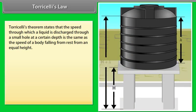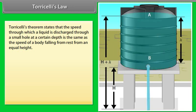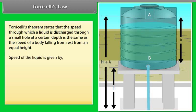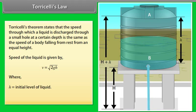Torricelli's law states that the speed at which a liquid is discharged through a small hole at a certain depth is the same as the speed of a body falling from rest from an equal height. The speed of the liquid is given by V = √(2gh), where h is the initial liquid level and g is the gravitational constant.